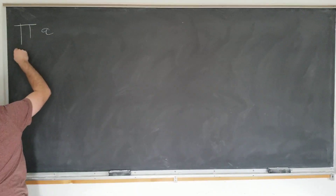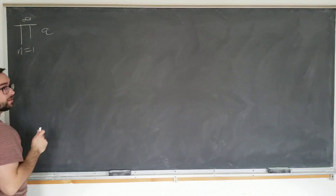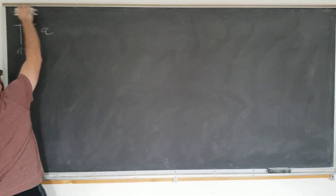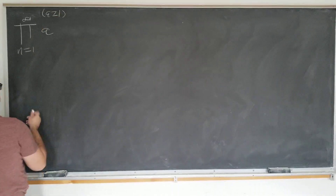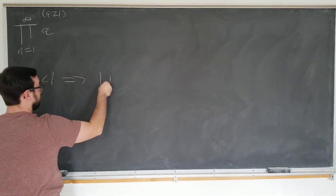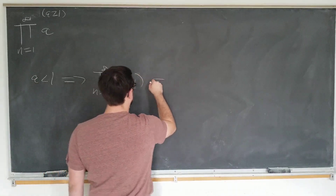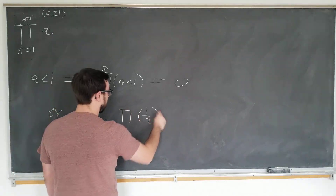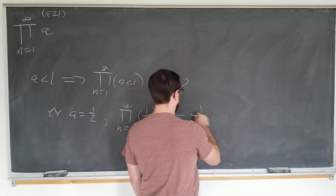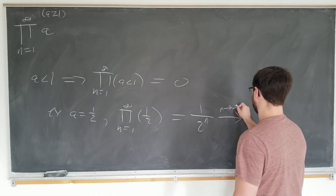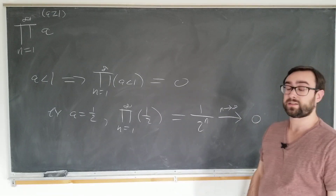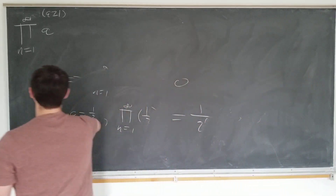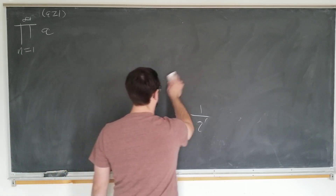We are going to multiply some constant a infinitely many times, and this only holds for a greater than or equal to 1. For a less than 1, the product is going to be 0. For example, a equals one-half gives the product of 1 over 2^n, which goes to 0 as n goes to infinity. So we don't need regularization for a less than 1, but we do for a greater than 1, since that would typically be regarded as infinite.